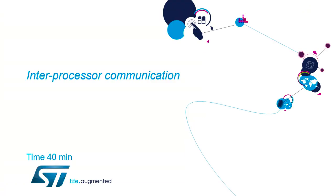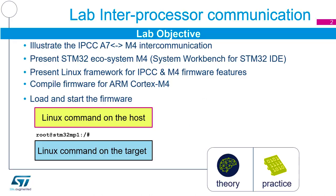We're now up to the last hands-on lab of the day. This one is about inter-processor communication — sending information from the A7 to the M4 and from the M4 back to the A7. We're going to illustrate how the inter-processor communication controller works for communications between the two cores.